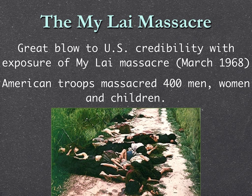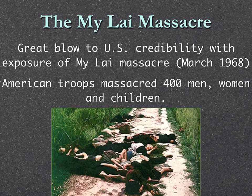Richard Nixon won the presidency in the fall of 1968 with the promise that he would get the United States out of Vietnam with honor. Nixon had a secret plan to end the war, and his plan also included Vietnamization — American troops would pull out and the Vietnamese troops would fight for their own country. Well, that didn't work either because the South Vietnamese troops were not particularly reliable.